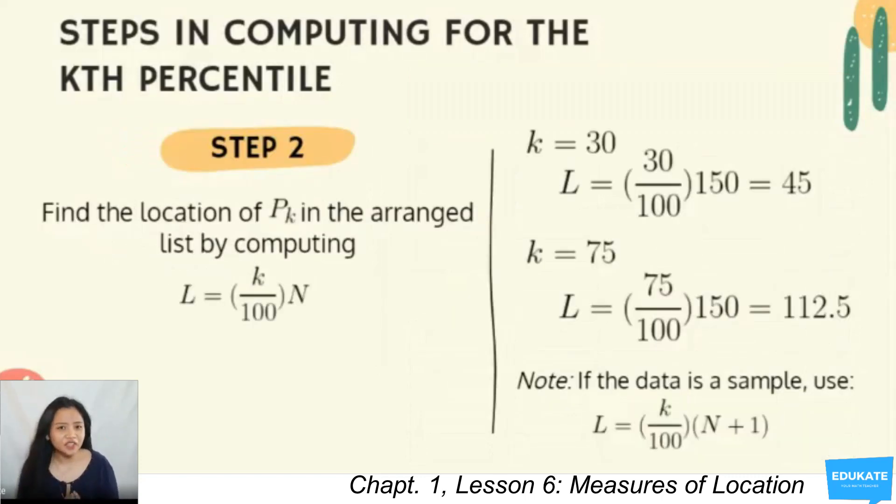Step 2, find the location of PK in the arranged list by computing for L. Your L is equal to K over 100 times N. Recall that N is the total number of observations in the dataset, while your K is the Kth percentile you are looking for. In example, if you're looking for the 30th percentile, that's going to be K equals 30. The location of PK is equal to 30 over 100 times the total number of observations. In our example, it was 150. So, it's going to be 30 over 100 times 150, that is equal to 45.